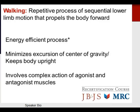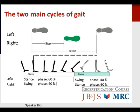Walking is a repetitive process of sequential lower limb motion that propels the body forward. It is an energy efficient process that minimizes the excursion of the center of gravity and keeps the body upright, involving a complex action of agonist and antagonist muscles. There are two main cycles of gait: from step to stride, taking us between stance and swing phases — 60% normally in stance phase and 40% in swing phase.